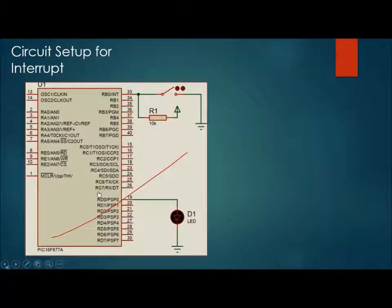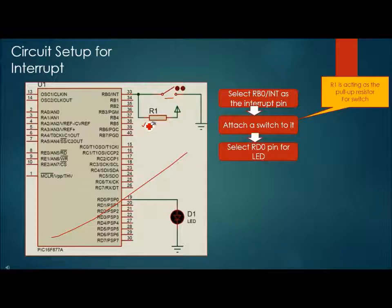Now we need to set up the circuit. Pin RB0 is selected. A switch has to be attached to it. The switch may require a pull-up resistance to work properly. RD0 pin is selected as output. Attach one LED with RD0.